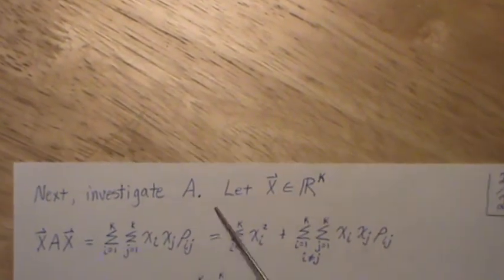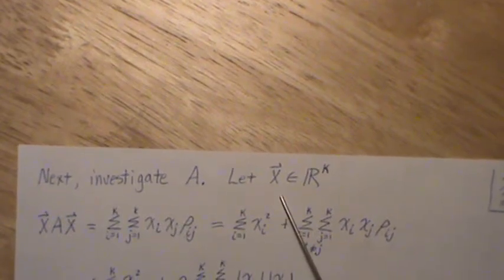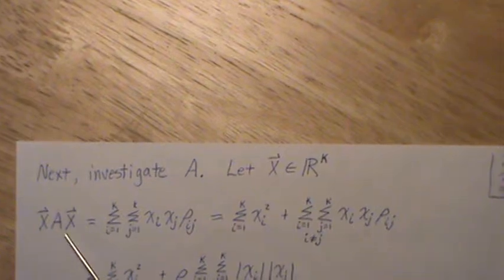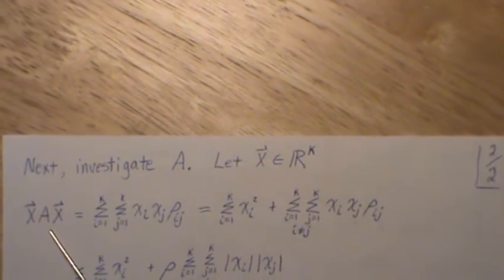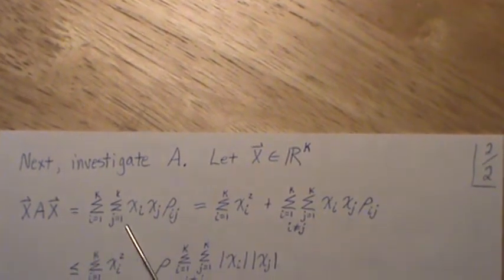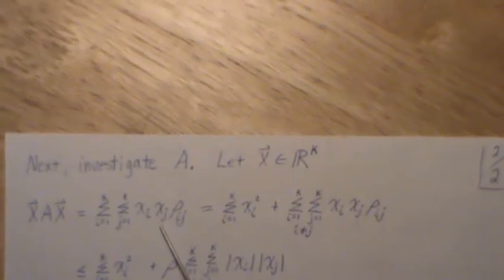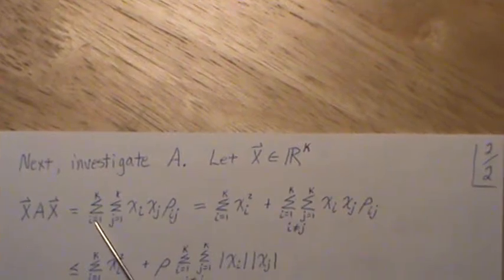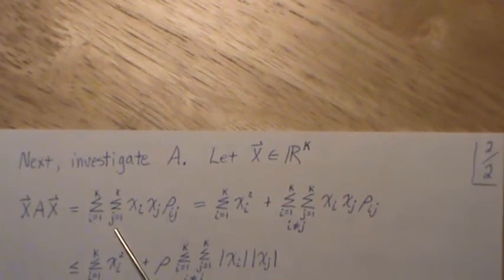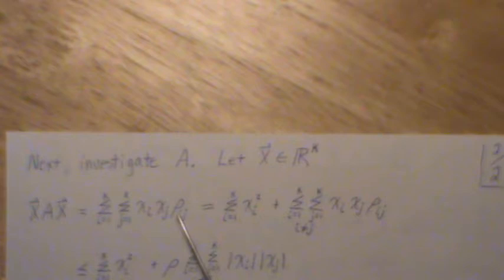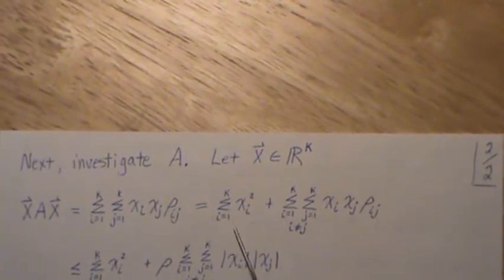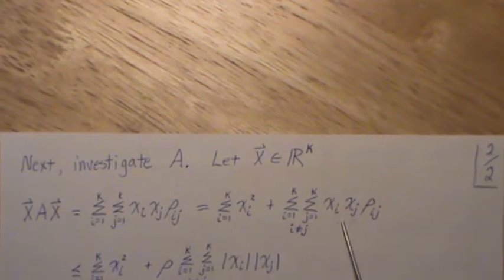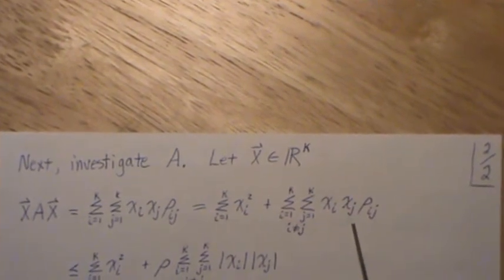Next, let's investigate A. Let x be in k-dimensional space. The quadratic form x^T A x equals the sum over i and j of ρ_ij x_i x_j. Taking out the piece where i and j are equal, where ρ is 1, we get the sum of x_i squared plus the sum over i not equal to j of ρ_ij x_i x_j.